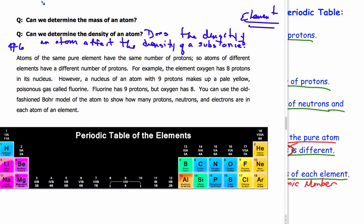Atoms of the same pure element have the same number of protons. So, atoms of different elements have different number of protons.